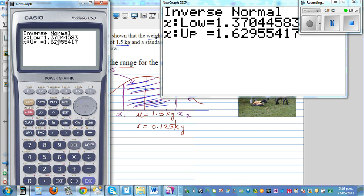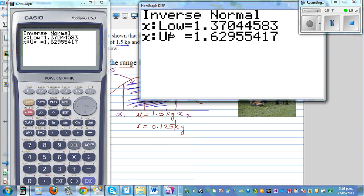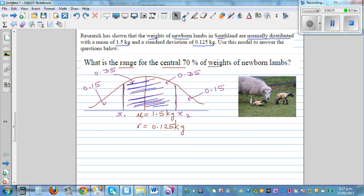So you can say it is between 1.37 kg and 1.63 kg. So this is your lower limit, this is your x1 and this is your x2. I will round it to 2 decimal places. So this is 1.37 and 1.63. The range is between 1.37 kg to 1.63 kg. It does make sense.